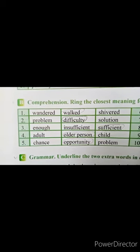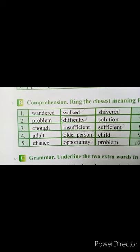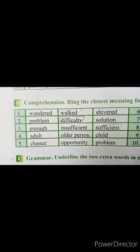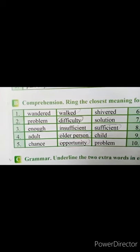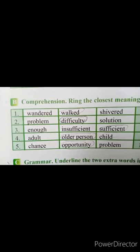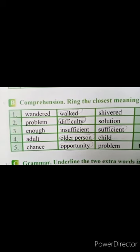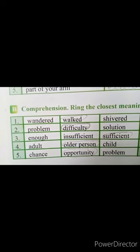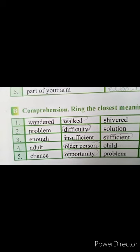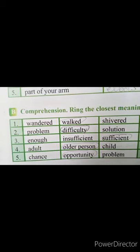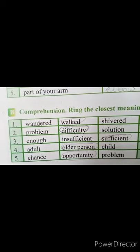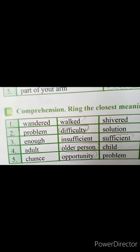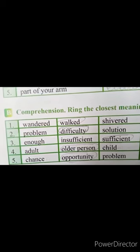First one is 'wandered'. Wandered means گھومنا — جس طرح elephant جو تھا وہ village میں wander کر رہا تھا. So options are 'walked' and 'shivered'. Walked means چلنا, shivered means کانپنا. تو یہاں پر 'walked' آتا ہے — we have to circle it. Wandered اور walk دونوں کا مطلب ہے چلنا. Second one is 'problem' — problem means مسئلہ. Options: difficulty and solution. Difficulty کو ہم circle کریں گے.